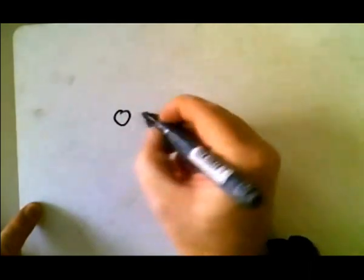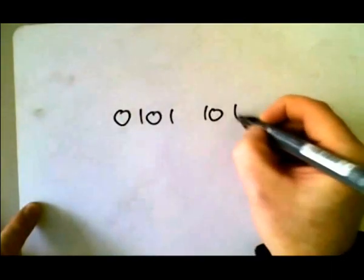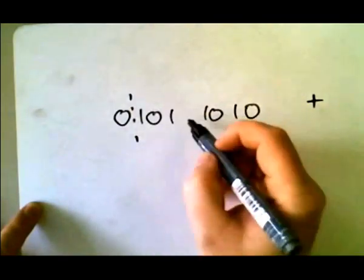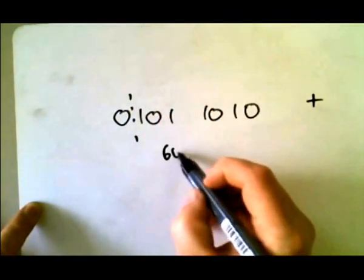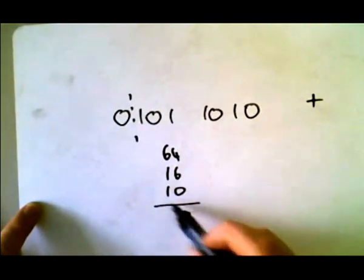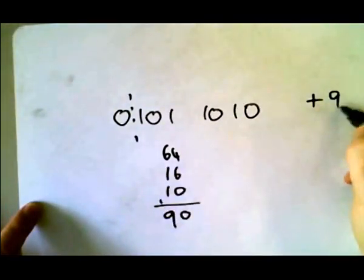We'll do a couple examples. If I said I've got this number here, what does that represent in denary? The most significant bit is the sign, so it's positive. And then we've got 64, 16, and that's 10. 6, 7, 8, 9, that's plus 90.